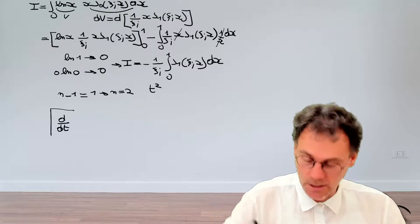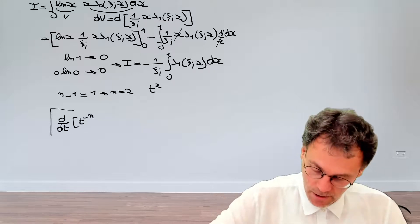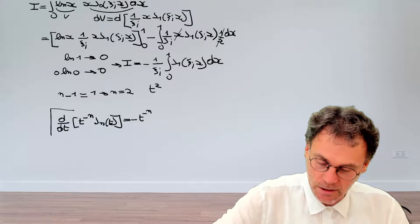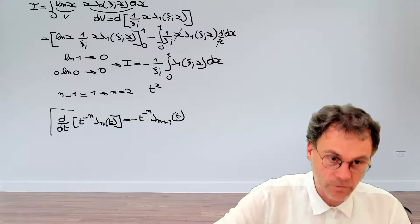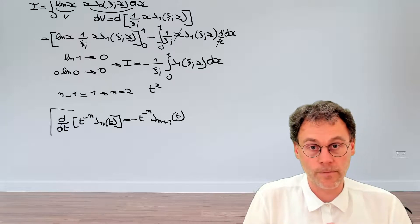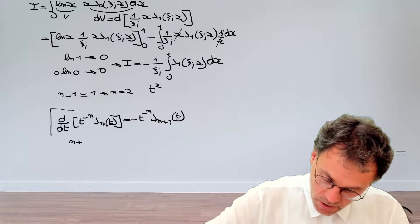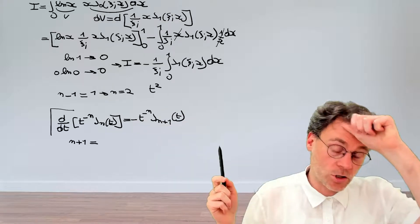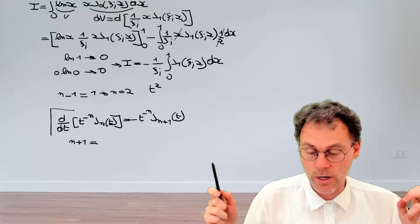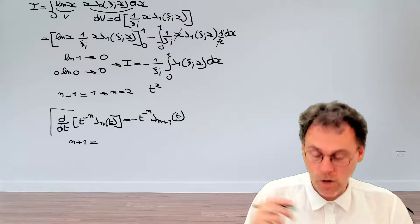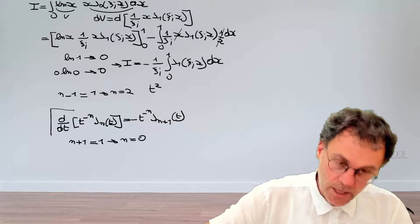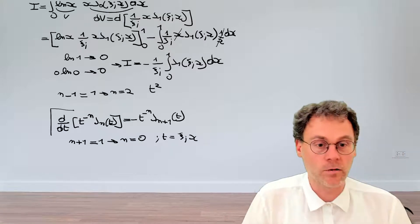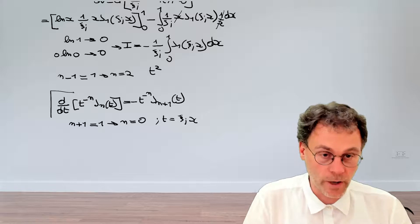So let's see what happens. We have the integral, sorry, we have d dt of t to the minus n j n t. So we've shown that this is equal to minus t to the minus n j n plus 1 of t. So again, this is a result that we've shown earlier. Which value of n should we use here? So now when we take the integral of left-hand side and right-hand side, we see that we have an integral involving Bessel functions of order n plus 1. So our n plus 1 in this particular case should be equal to 1. So n plus 1 should be equal to 1. Therefore, n should be equal to 0. And again, if we say that t is equal to psi i of x, then we can just write down the following.